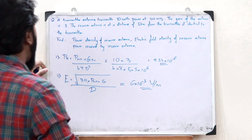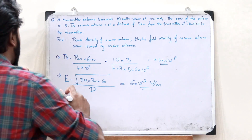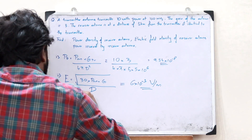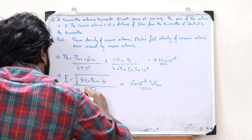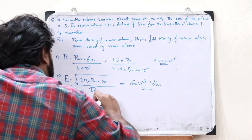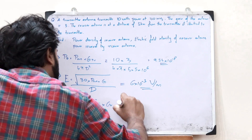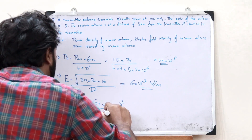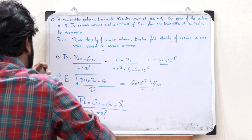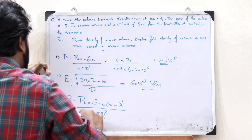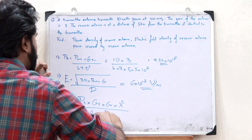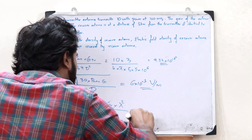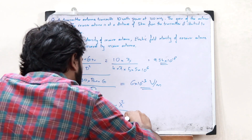Finally, to find the power received by the receiver antenna, we use the Friis transmission equation: P_r = P_t × G_tx × G_rx × λ² / (4πr)². Since f = 100 MHz, the wavelength is λ = c/f = (3×10⁸) / (100×10⁶) = 3 meters.